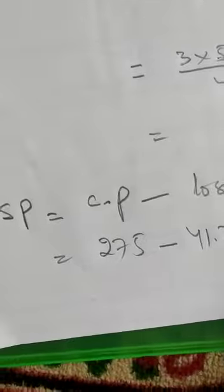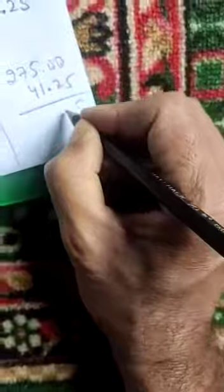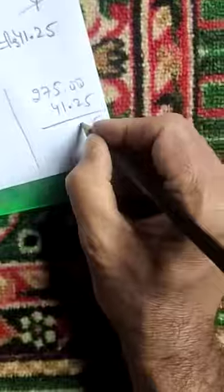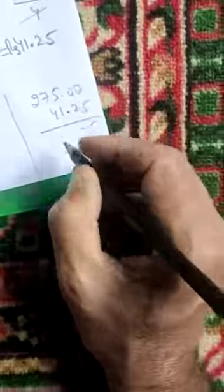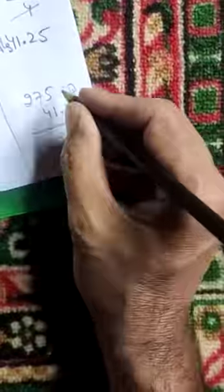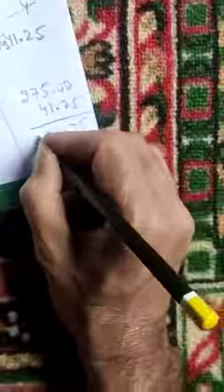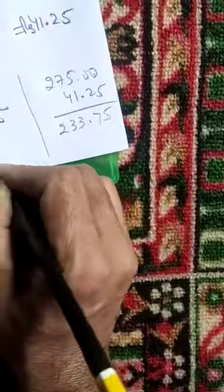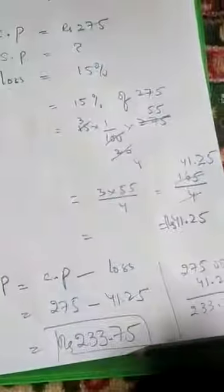Doing the subtraction: 275 minus 41.25. This equals 233 rupees 75 paise.